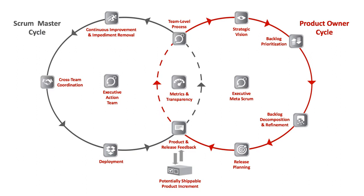Scrum at Scale is designed to accomplish this goal via its scale-free architecture. Scale-free architectures are commonly found in biological systems like the human body and in chip designs. The internet is designed to be scale-free by every node having the same structure as every other node. By utilizing a scale-free architecture, an organization is not constrained to grow in a particular way determined by arbitrary rules; rather, it can grow organically based on its unique needs at a sustainable pace. Scrum at Scale is designed to scale across the organization as a whole — all departments, products, and services — and can be applied across multiple domains in industry, government, or academia.